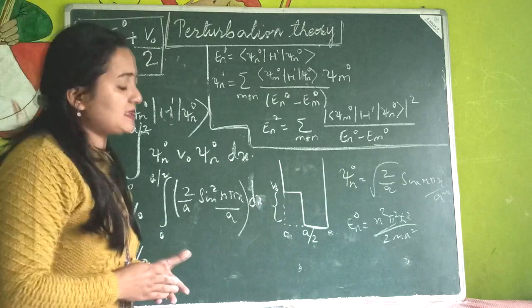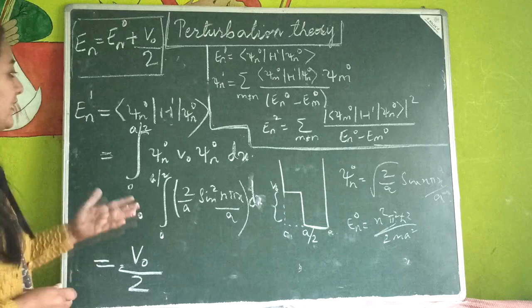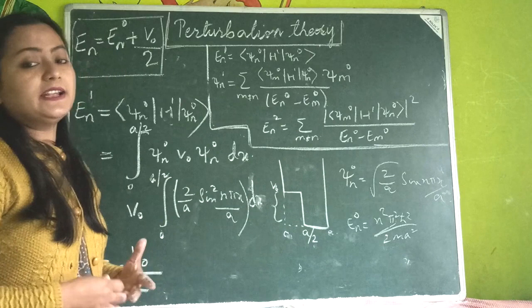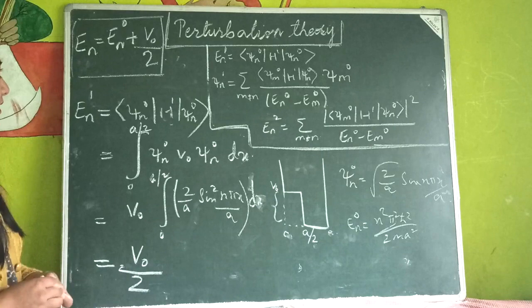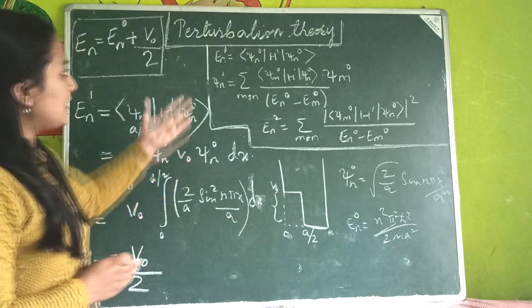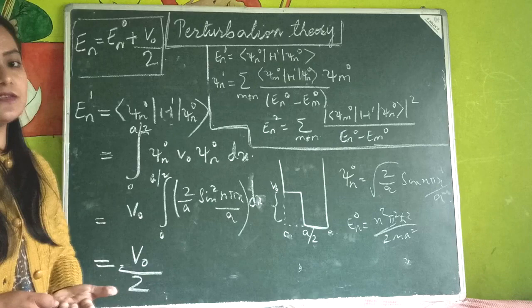That is it for today's video. In the next part we will discuss more problems. Here I have discussed constant perturbations - V₀ where the whole floor was raised, and where only half the floor was raised. In the next part I'll do more problems where the perturbations are not constant. The key thing to remember is: once you know the exact solutions, you apply these formulas to find corrections to your energy eigenvalues and wave functions.